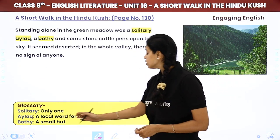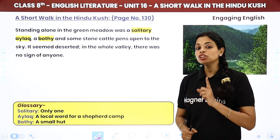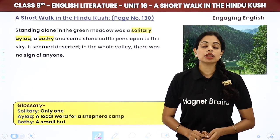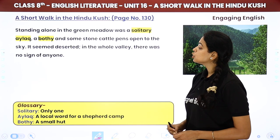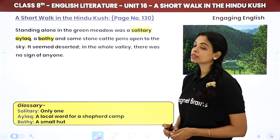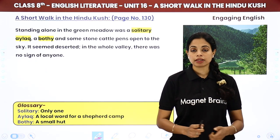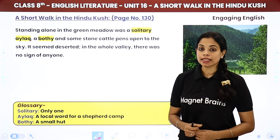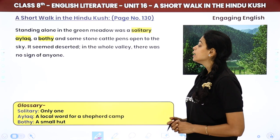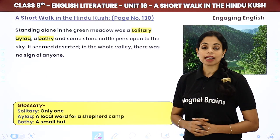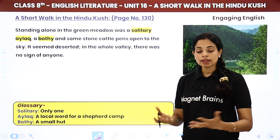Standing alone in the green meadow was a solitary aleck — a local word for a shepherd's camp — a bodhi, and some stone cattle pens open to the sky. It seemed deserted; in the whole valley there was no sign of anyone. 'Aleck' is a local word for a shepherd camp. There was only one solitary shepherd camp — just one — and some open stone cattle pens with no shed on top. The whole place appeared completely empty.